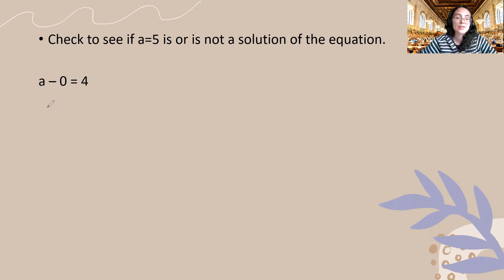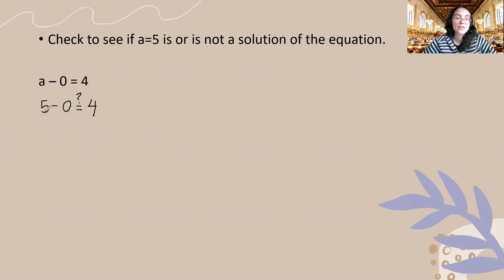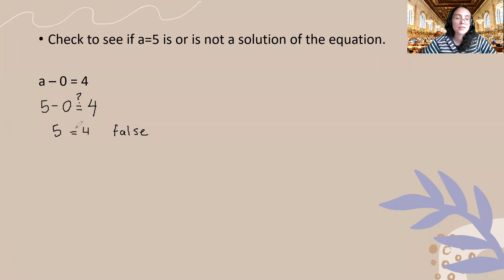So I'm going to substitute first. Whenever I see an a I'm going to put five. I'm going to subtract that with zero and I'm going to say is this equal to four. On the left hand side of the equation, five minus zero, so I'm going to carry out the subtraction and that will be five. Ask yourself: is five equal to four? No it's not. So this is a false statement and I'm going to strike through my equal sign to say these two values are not equal to each other.